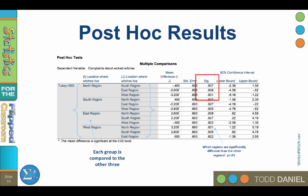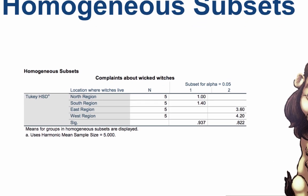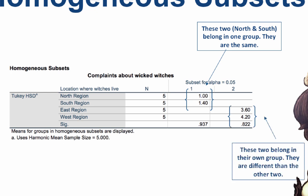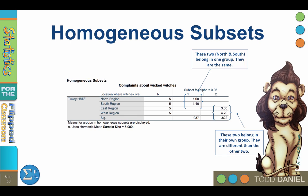The SPSS output will create subsets for groups that are the same as each other; subsets that differ will be in different columns. The north and south regions are both in the same subset with means of 1 and 1.4. The east and west regions are also in the same subset — so they are the same as each other, but different from the first subset of north and south. North and south are in a low-complaints group, and east and west are in a high-complaints group. The north-and-south group is significantly different than the east-and-west group, but the regions within each group are not significantly different from each other.